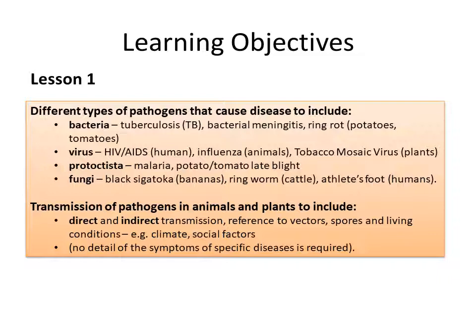The other part of this lesson is going to be on transmission of pathogens in animals and plants, and the difference between direct and indirect transmission. That will also refer to things like vectors, spores, and various different living conditions. You aren't expected to know the symptoms of each of the diseases, but you're going to need to know something about the way in which they're transmitted, and therefore the ways in which their transmission can be controlled.